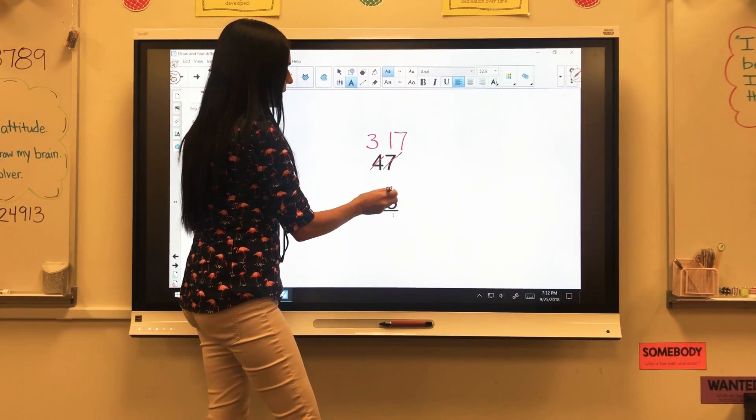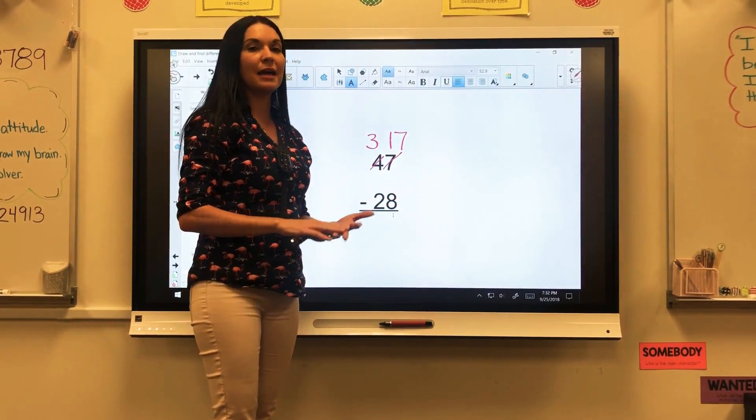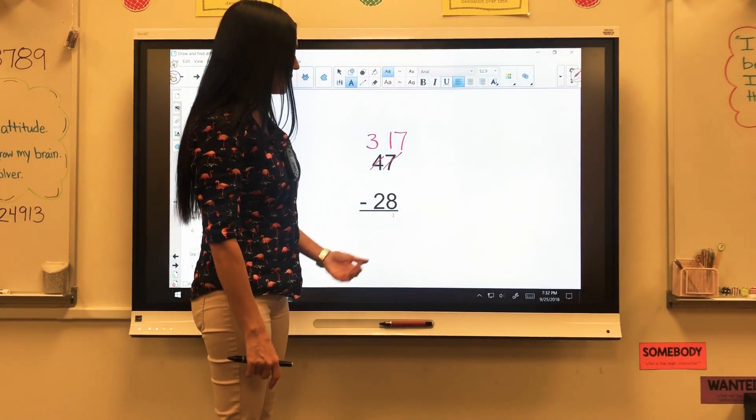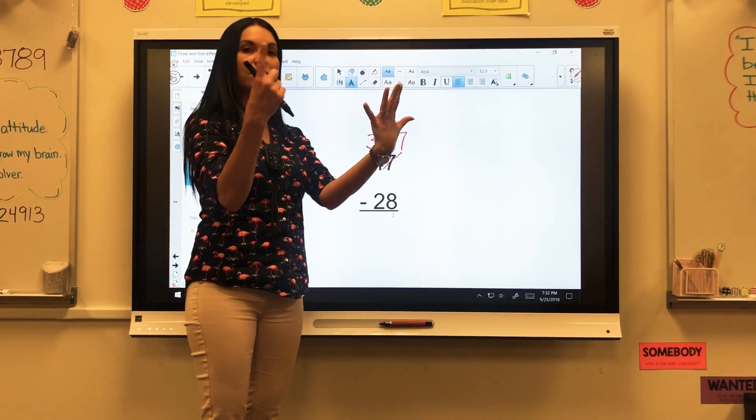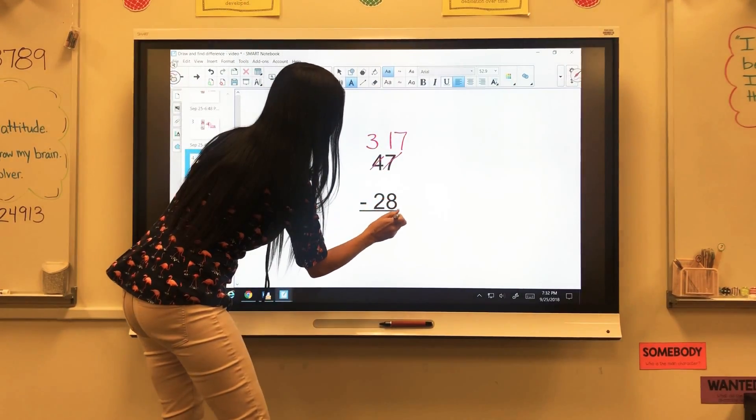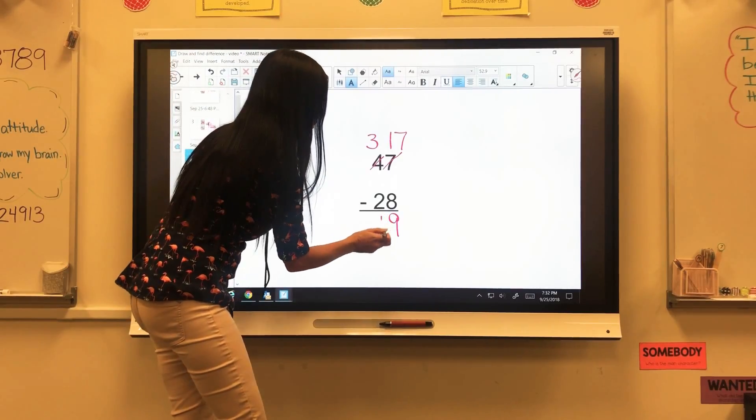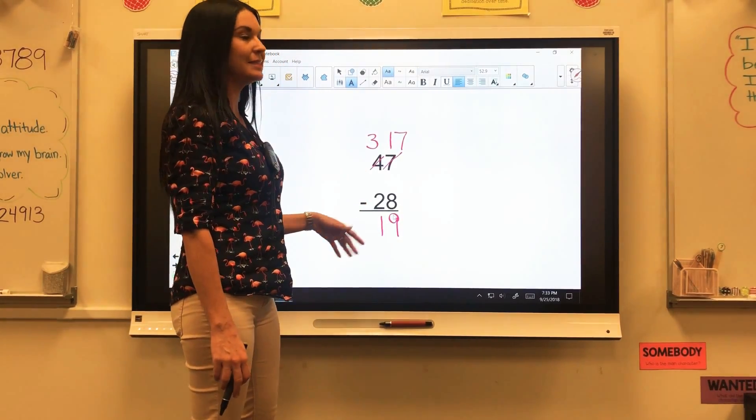So 17 minus 8. Students can use their number lines. They can count up. Whatever is easier for them. So 17 minus 8. Counting up would be 8, 9, 10, 11, 12, 13, 14, 15, 16, 17, 9 left. So 17 minus 8 is 9. And then 3 minus 2 is 1. So 47 minus 28 is 19.